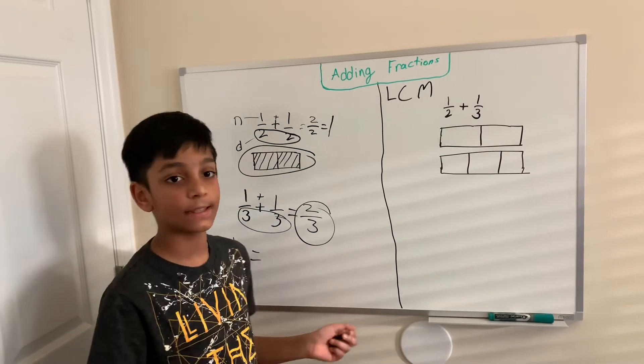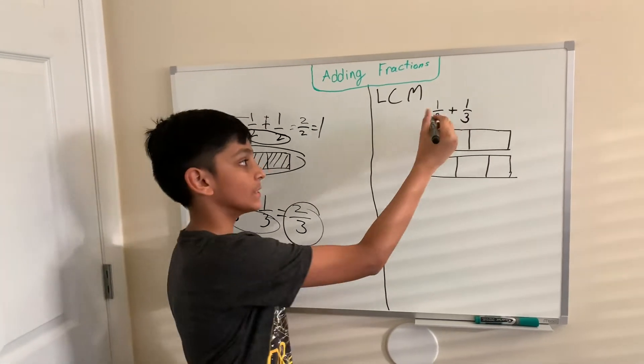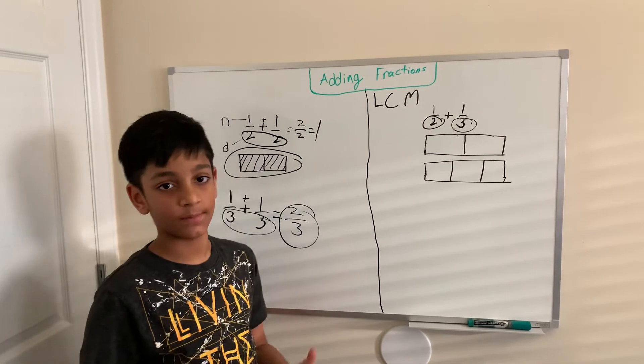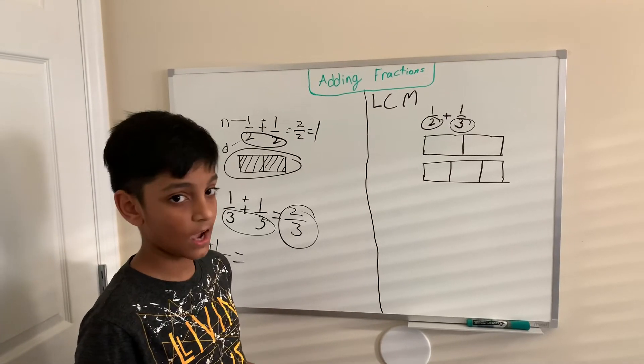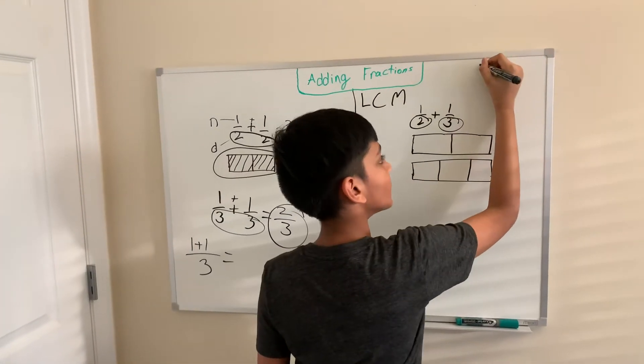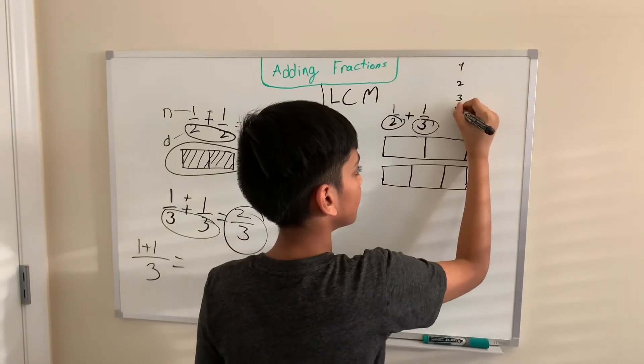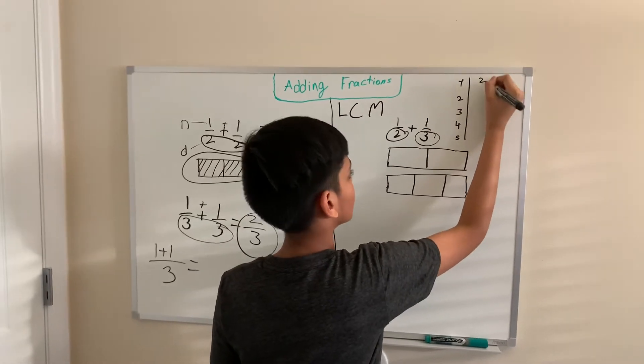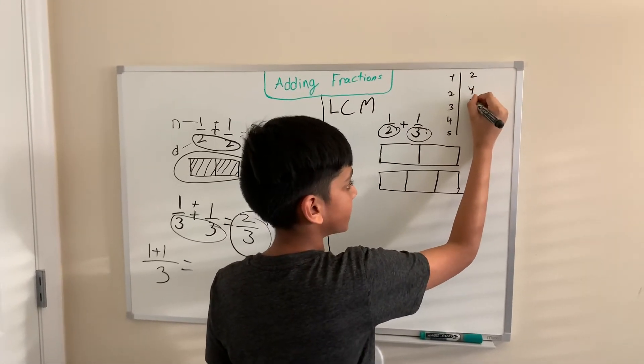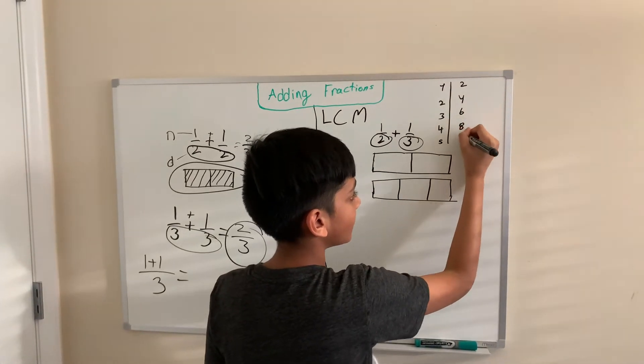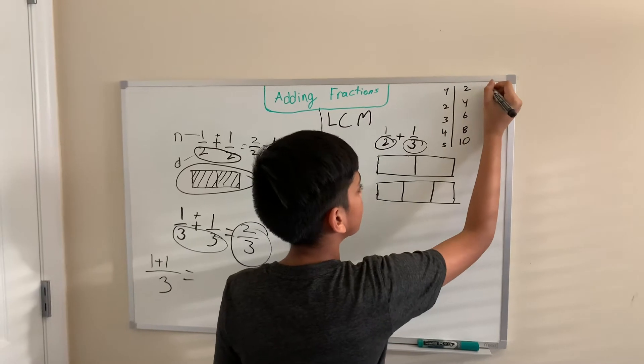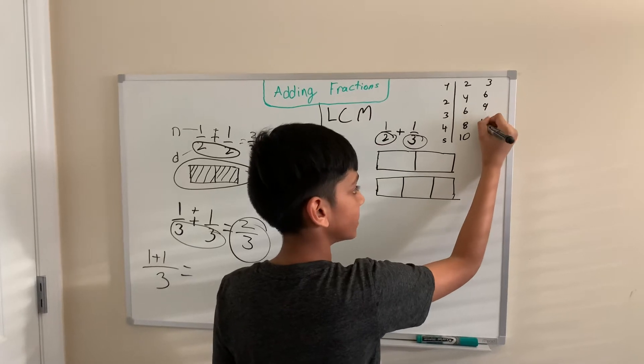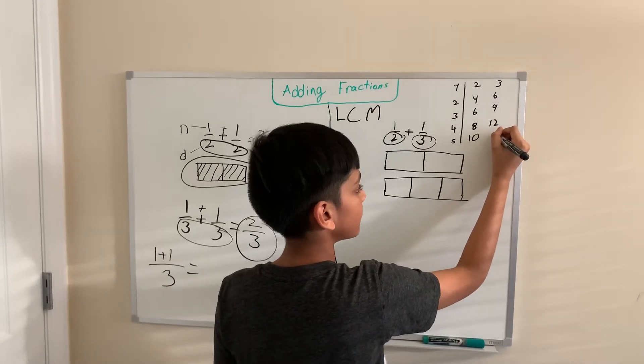The LCM is the least common multiple of the two numbers that are the denominators, 2 and 3. To find the LCM, we have to look at the timetables of these two numbers. Let's go up to 5. 2 times 1 is 2, 2 times 2 is 4, 2 times 3 is 6, 2 times 4 is 8, and 2 times 5 is 10. 3 times 1 is 3, 3 times 2 is 6, 3 times 3 is 9, 3 times 4 is 12, and 3 times 5 is 15.